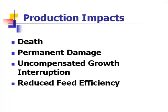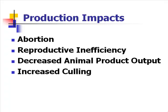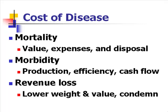We may have reduced feed efficiency. All of these come through and affect — abortion, reproductive inefficiencies, decreased animal product output, increased culling. And we saw a lot of these as we looked at the PRRS study. Decreased animal product output, lower pigs per litter, reproduction inefficiency, breeding problems that came into the herd, and there were abortions coming in.